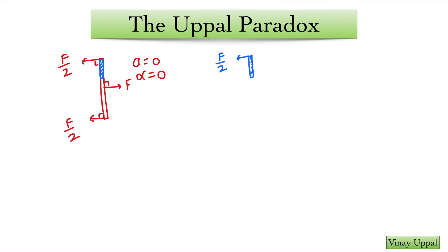If I were to have the force by the rest of the rod on this blue section as F by 2 to the right, then you will have acceleration 0 but you will have a non-zero angular acceleration. This is not possible because the entire rod has zero angular acceleration.